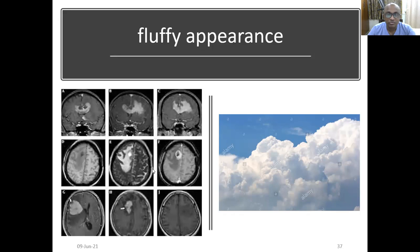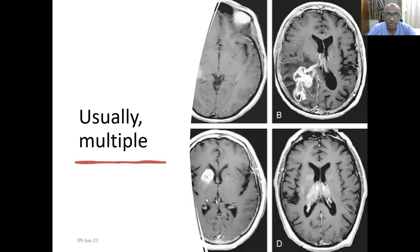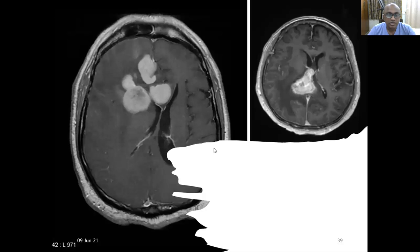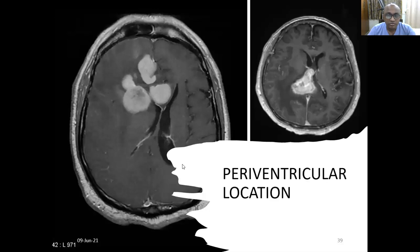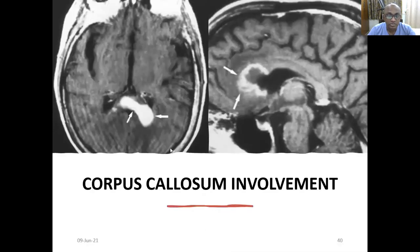The corpus callosum involvement looks like a cotton ball or fluffy appearance. This fluffy appearance can be single but also multiple lesions here and there. The lesion is mostly in the periventricular location, which is quite a differentiating feature from other brain problems.